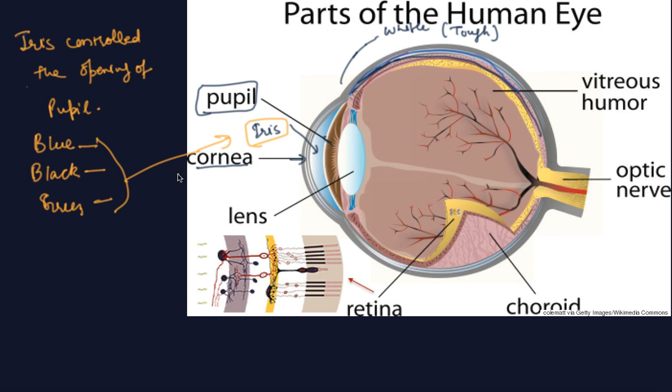Behind the pupil, there is a lens. This is the lens of the human eye, which is thicker in the center. What kind of lens is thicker at the center? You have learned this in class 7.